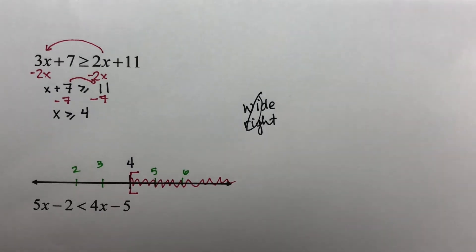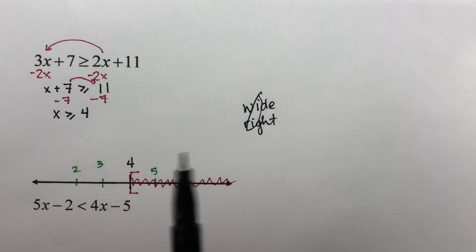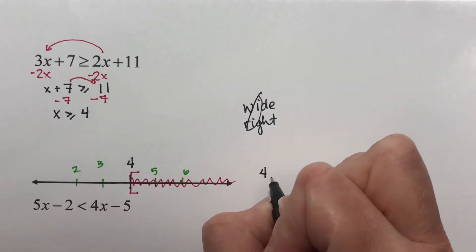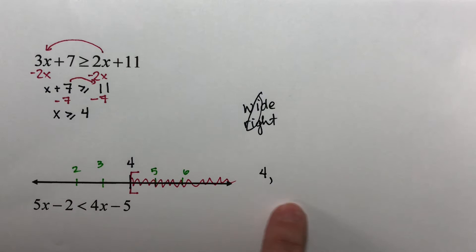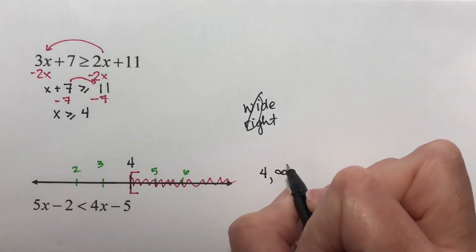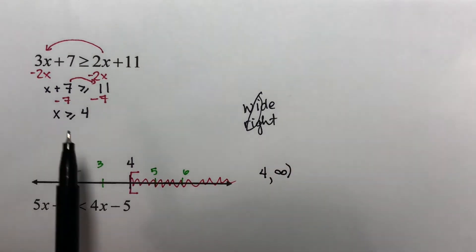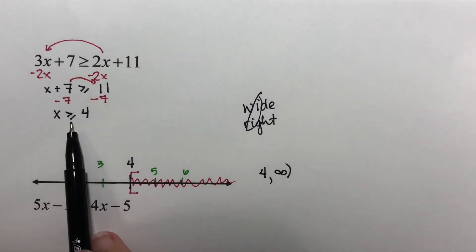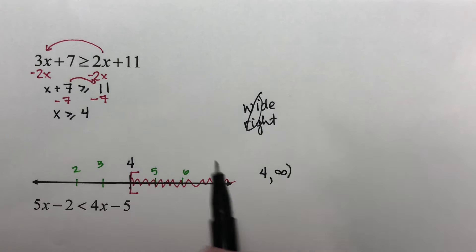Now use this to find your interval notation. You're always going to describe what you have shaded. Its left-hand boundary is a 4. Its right-hand boundary, it goes up forever. It goes up in the positive direction. All my negative numbers are over here. It goes up in the positive direction, so it's a positive infinity. Infinities always get parentheses. We decided that since this had an equal to, it got a bracket here, so it also gets a bracket here.